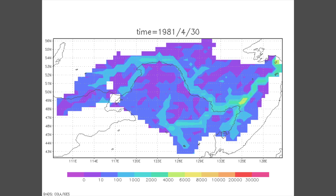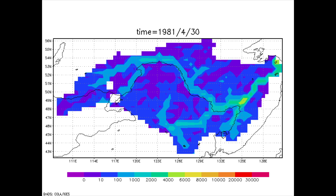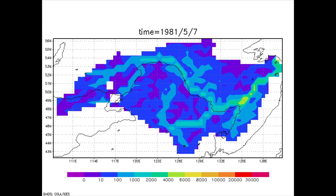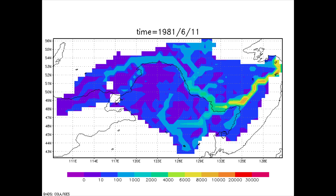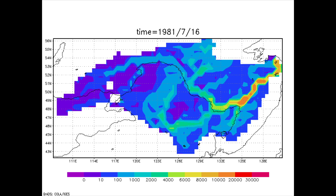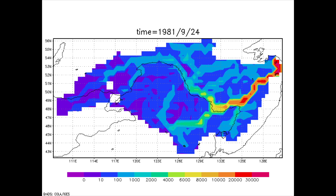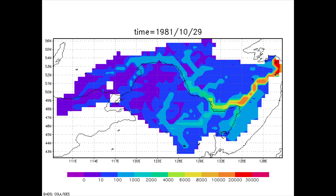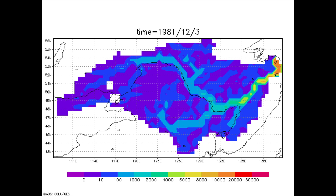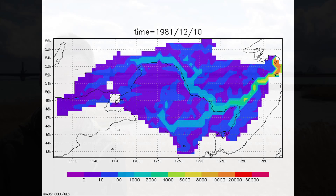This is an example of hydrological simulations in the Amu river basin. You can see the blue color area and the red color area. The red color area has high volume of water in the river, and you can see the water is flowing from the left-hand side to the right-hand side.